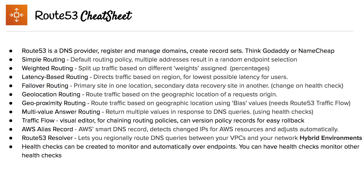You have Route 53 Resolver, which is a hybrid solution so you can connect your on-premise and cloud environments and network between them. And then you have health checks, which can be created to monitor and automatically fail over to another endpoint. You can also have health checks monitor other health checks to create a chain of reactions for detecting issues with endpoints.